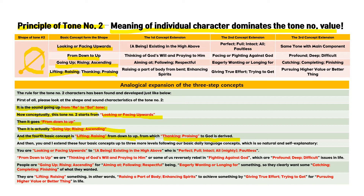We are going to develop these basic concepts to the next level. You and I extend these four basic concepts up to three more levels, following our basic daily language concepts, which is so natural and self-explanatory. When you are looking or facing upward to a being existing high above — maybe God, who is perfect, full, intact, almighty, or a fortress — just think about Jesus Christ: he is perfect, full, intact, almighty, and a fortress.